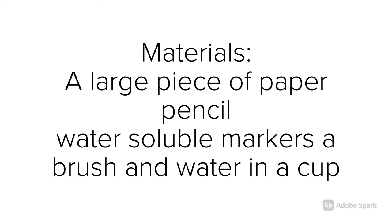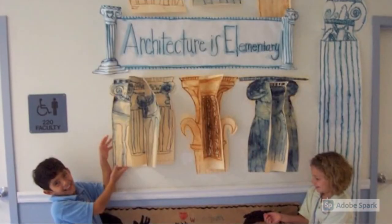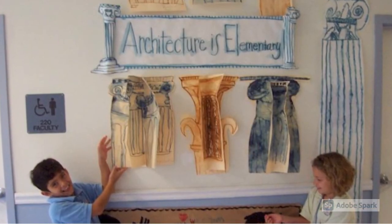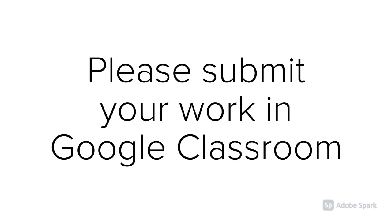Choose an order that you would like to recreate on a larger sheet of paper. You're going to create the order in pencil and trace in water-soluble marker. You're going to paint over the marker with water, and this is going to make the marker spread and look antique. Here are some examples of my students from long ago. I hope you enjoyed this assignment — please submit your work in Google Classroom.